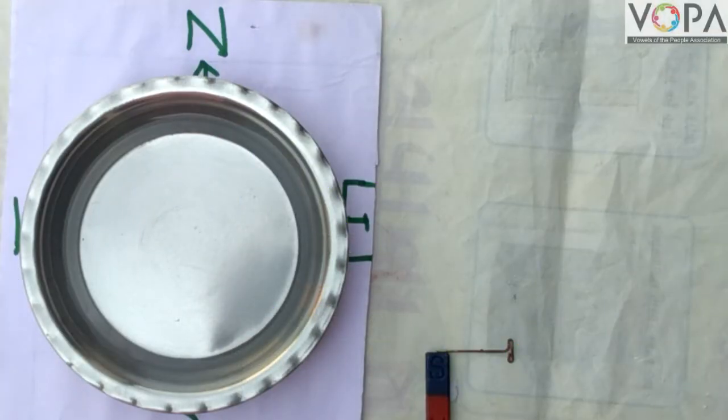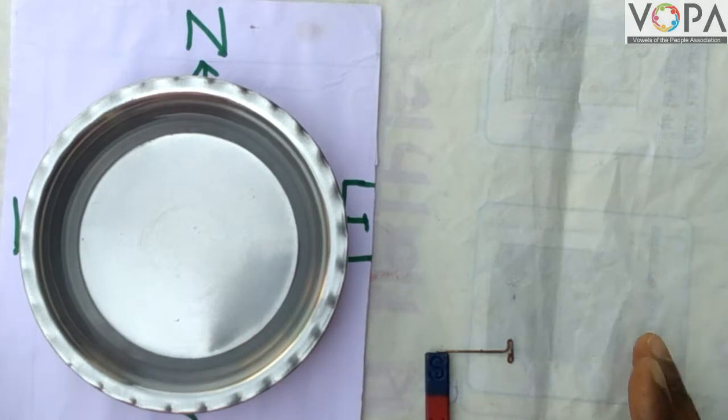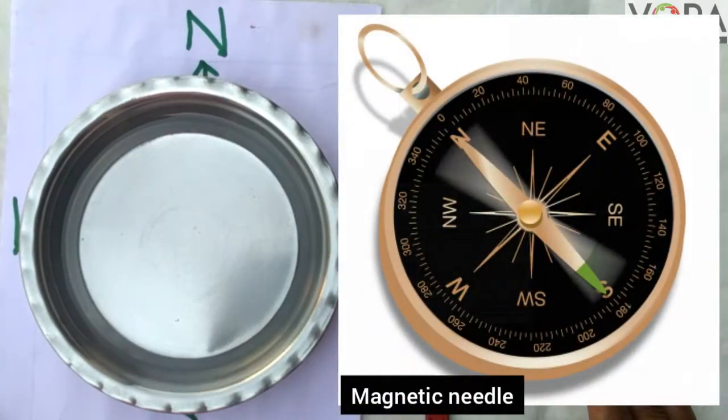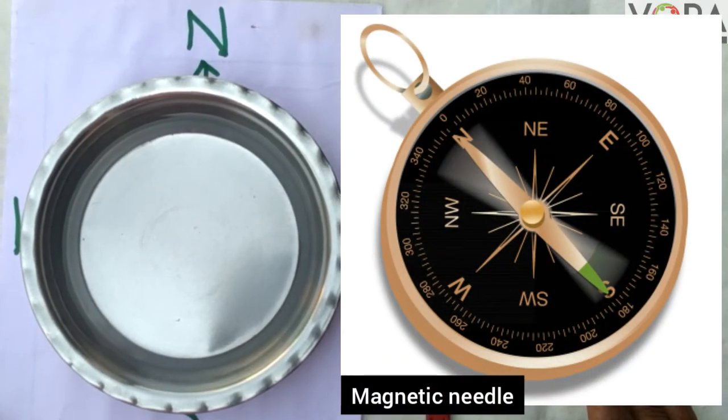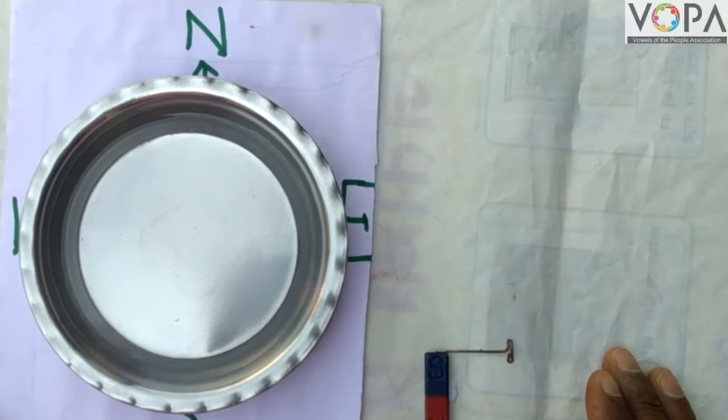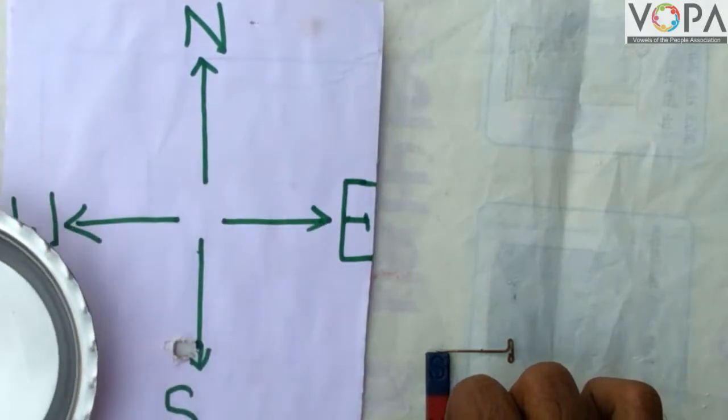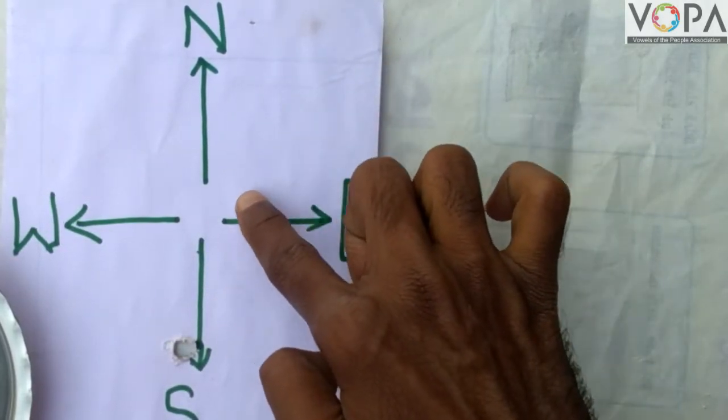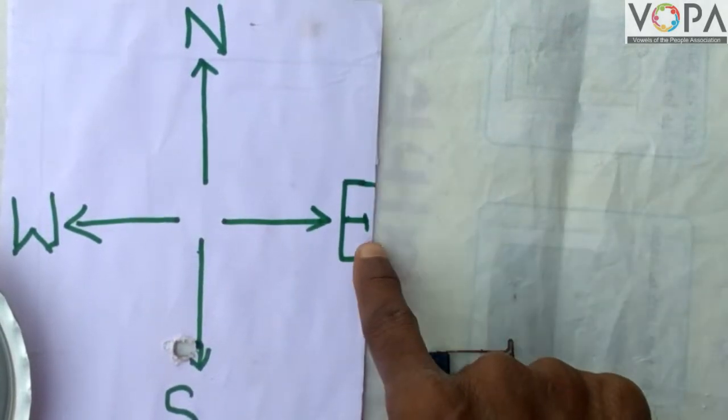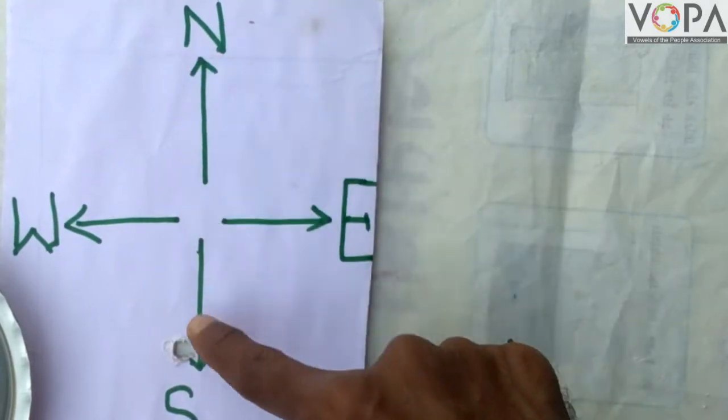Hi dear students, in this video we will learn about the magnetic needle. Take a square cardboard and mark the directions on it. This is the cardboard and I have marked here four directions: east, west, north, and south.